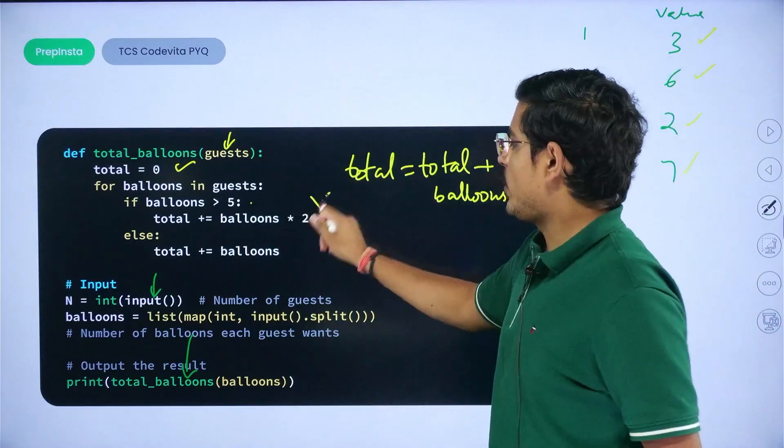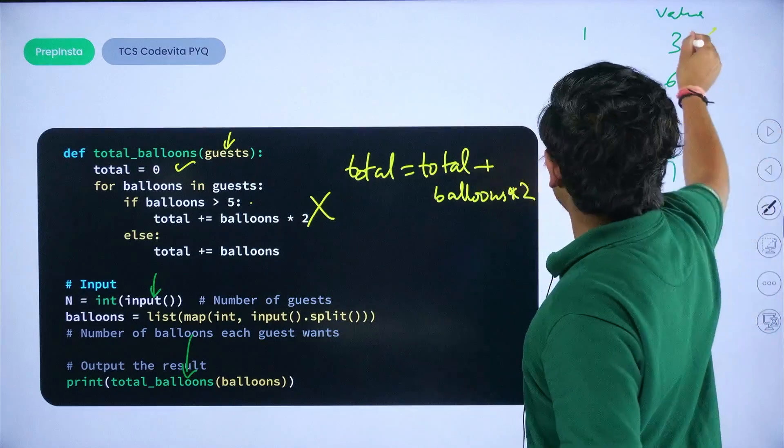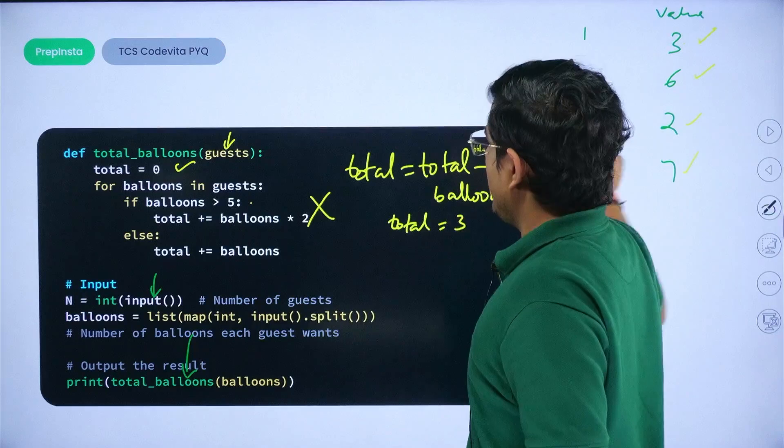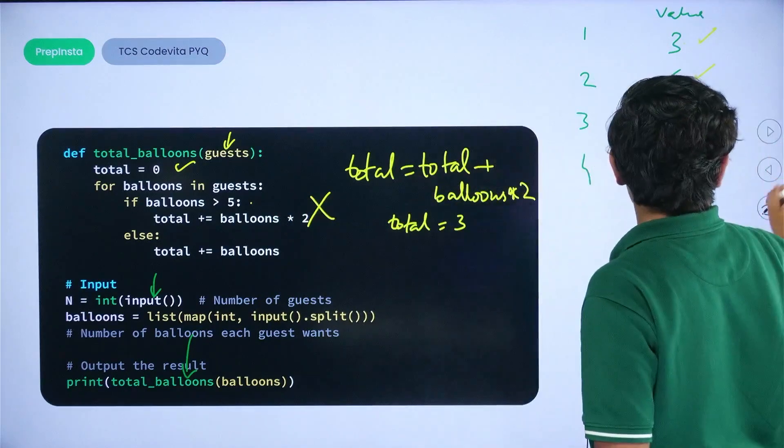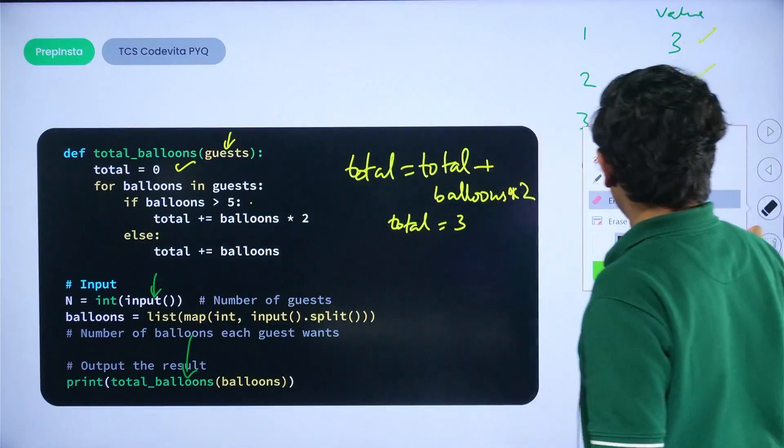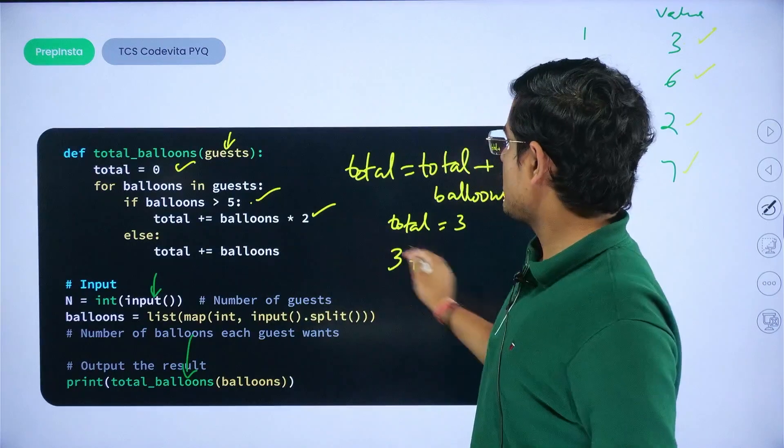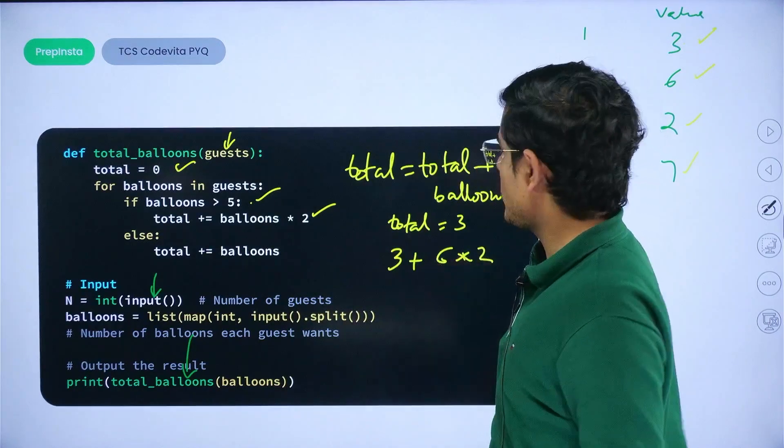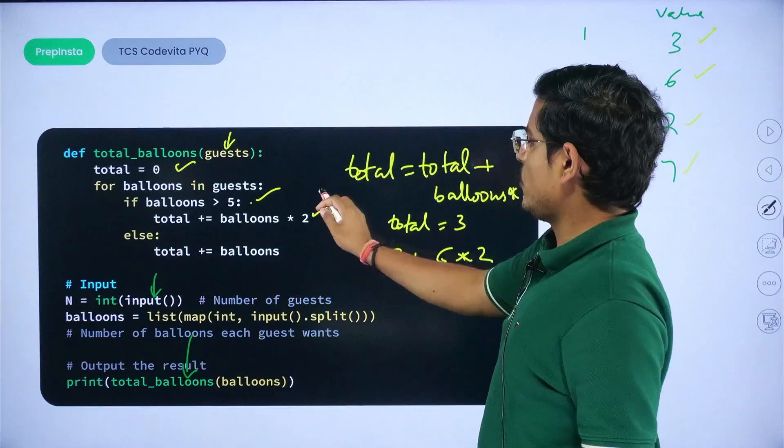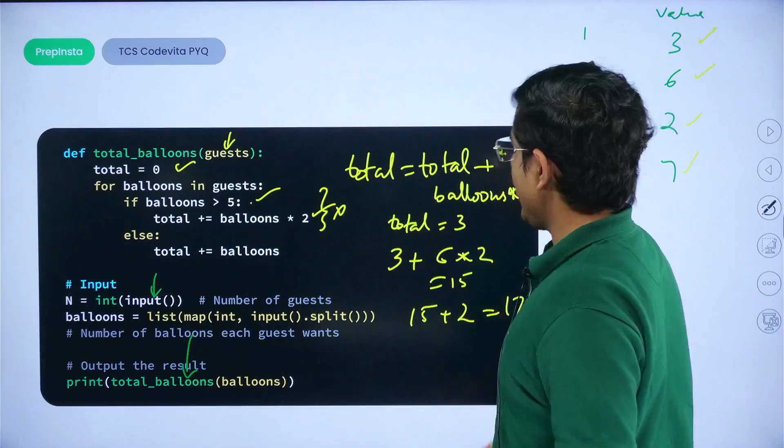So balloons into two. So if you see carefully, the first one is three. This if block won't execute. I will come to else block. All you need to do is add balloons to the else block, so you would add this three. So now total is three. You go to the next value. When you go to the next value, when you reach six, when you iterate over it, six is greater than five, it is true. So if this is true, this would work. So three plus six into two, which is six into two is twelve, so this becomes fifteen.